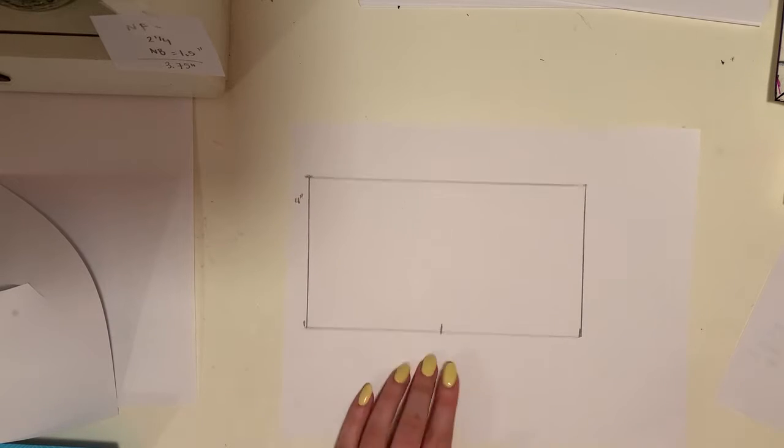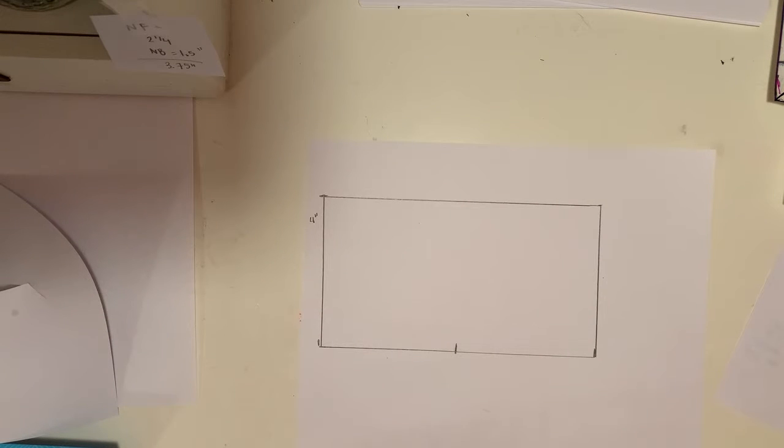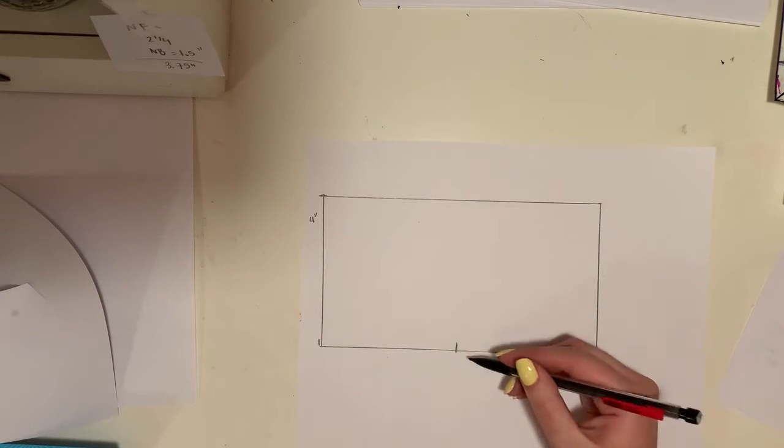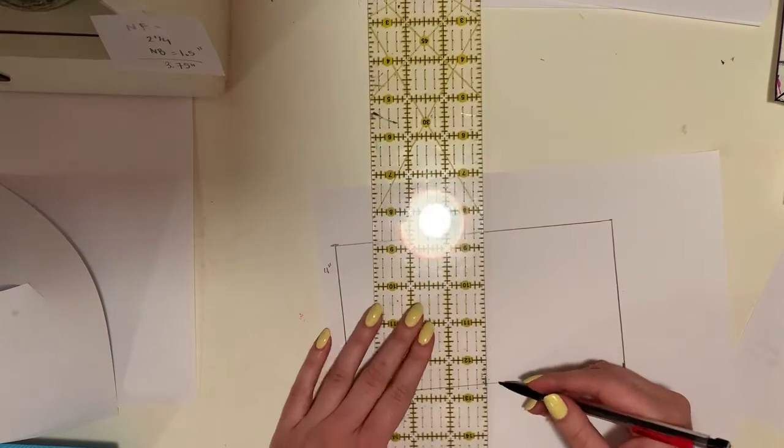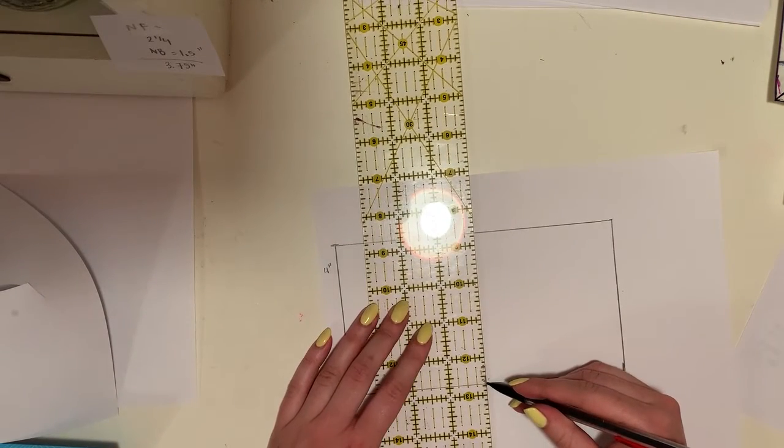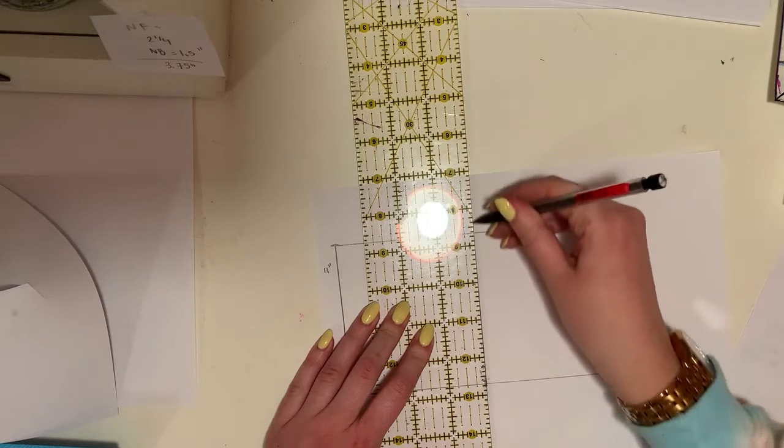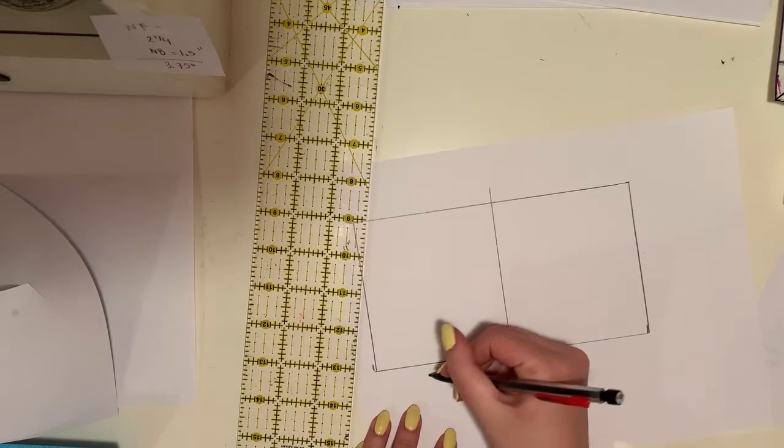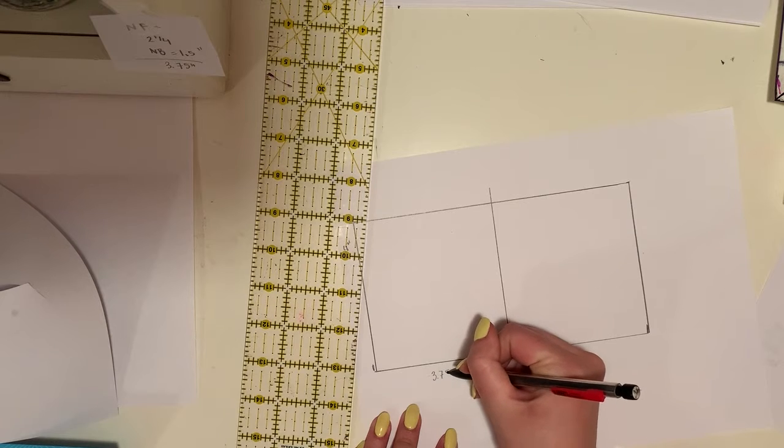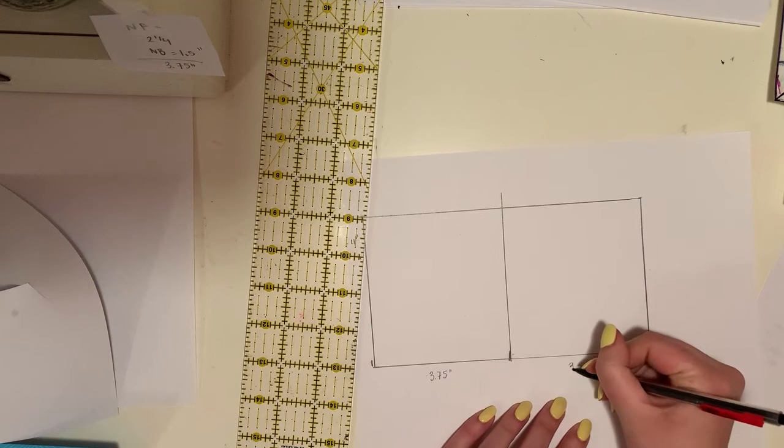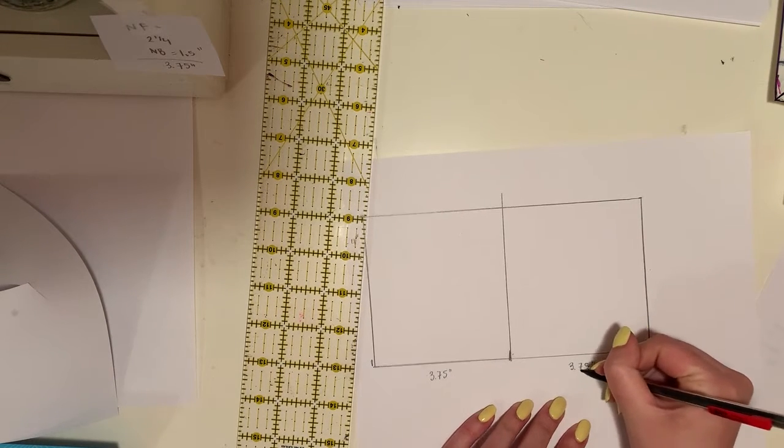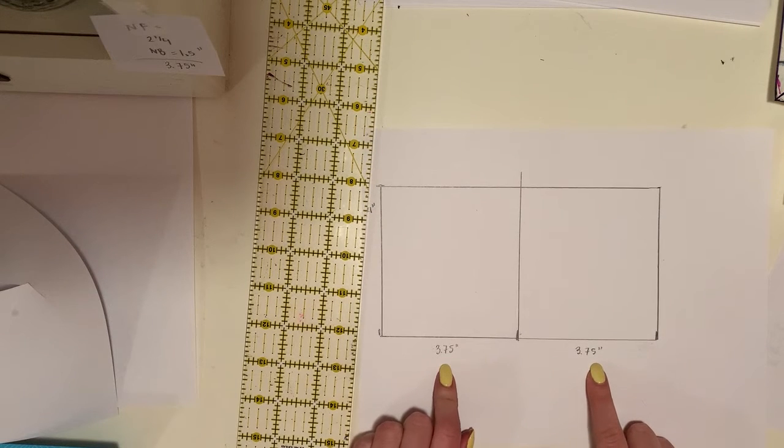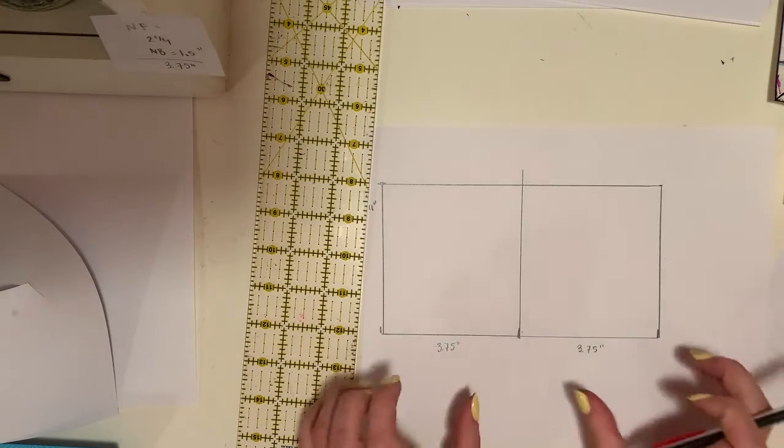And we're going to write in our neckline notches. So now this line here is our center front, so that notch that we started at the 3.75 or your neckline measurement. Again, this measurement might be different for your sloper, so plan accordingly.